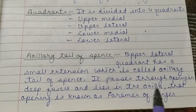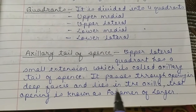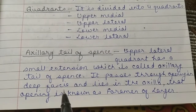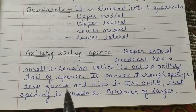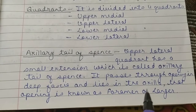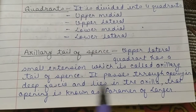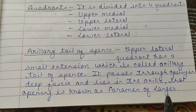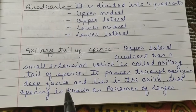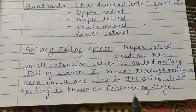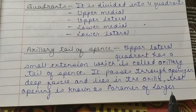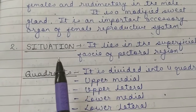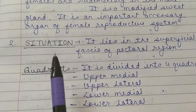The axillary tail of Spence passes through an opening in the deep fascia and lies in the axilla. That opening is known as the foramen of Langer. This is the situation of the mammary gland.